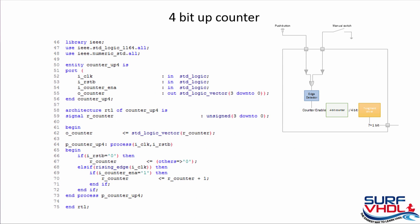Now we understand how to implement the 4-bit counter. This is an example of VHDL code for a 4-bit up counter. In this case we have inputs: clock, reset, and counter enable, and the output is the count. We need to declare an internal signal for the counter of type unsigned, and we need to declare the numeric_std library in order to use unsigned.